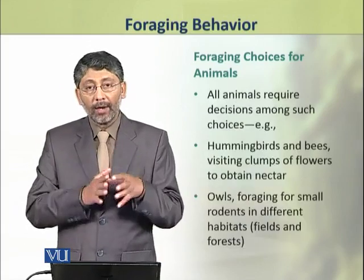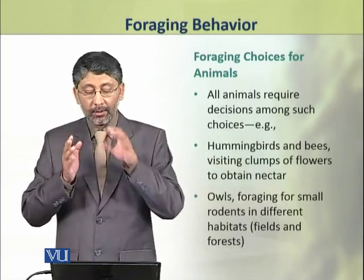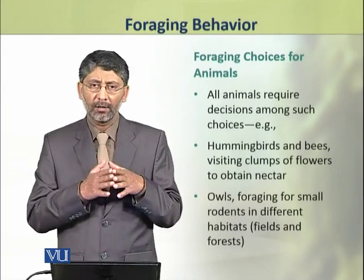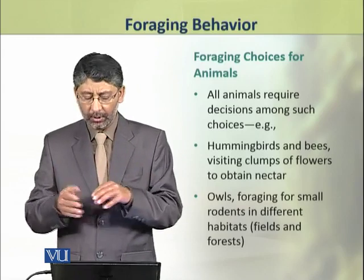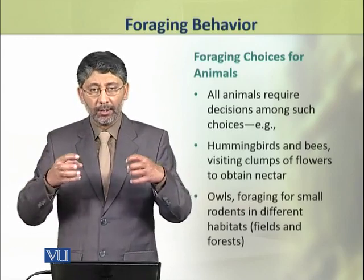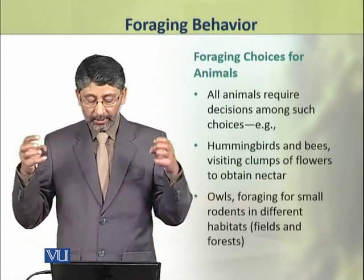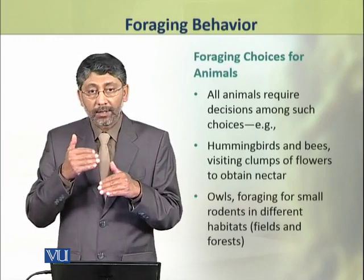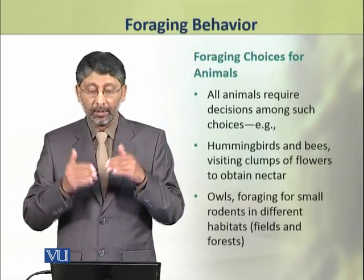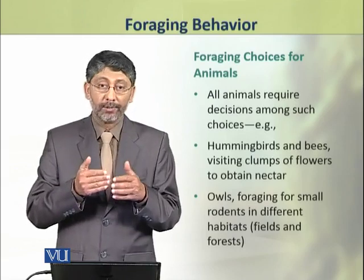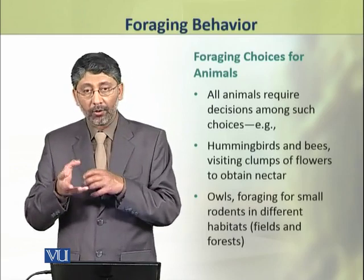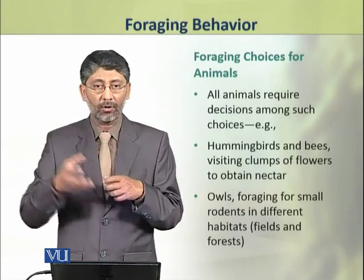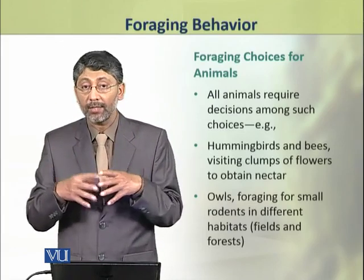All animals require decisions among such choices. For example, hummingbirds or bees, which visit flowers to suck juice or nectar, can also use them to make choices. Similarly, owls, which hunt small rodents across different areas or habitats, pick them and eat them, and they can also use this to make choices.